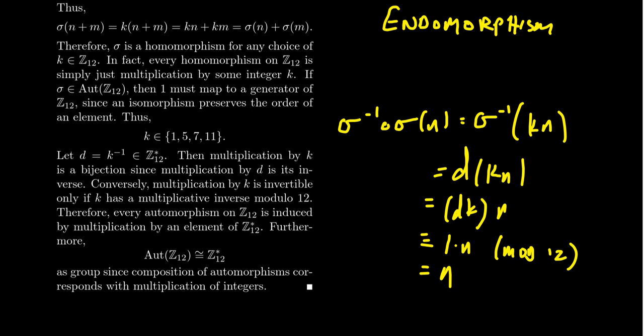So if we choose K so that it has a multiplicative inverse — since sigma is just multiplication by K — then it'll be a bijection. Every automorphism must have this form. The automorphisms of Z12 coincide with multiplication by the multiplicatively invertible elements 1, 5, 7, and 11. In collection, the automorphism group of Z12 is isomorphic to Z12*. Nothing in this argument really requires mod 12 specifically — we can lift this argument to all cyclic groups.